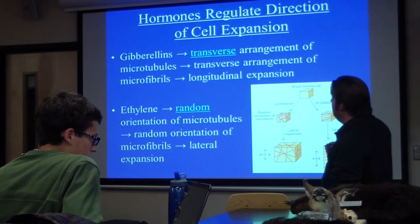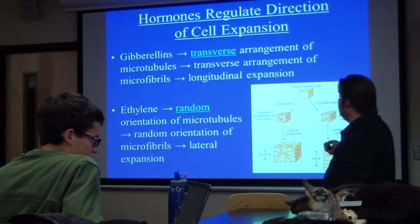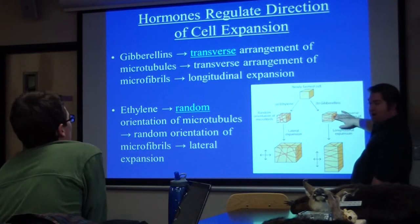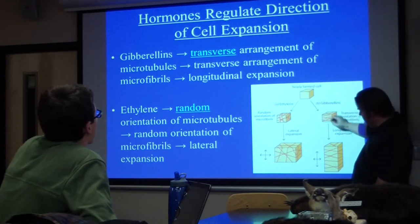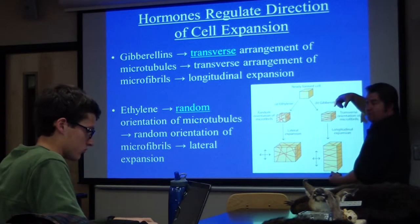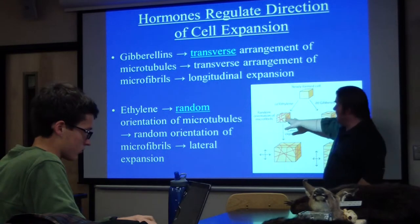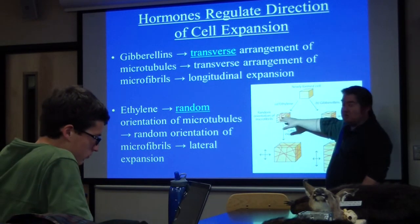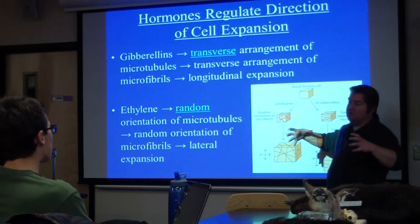For example, gibberellins lead to a transverse arrangement of microtubules, which leads to a transverse arrangement of microfibrils, which leads to longitudinal expansion — that's going to be a stem or root cell under the action of gibberellins. Ethylene, on the other hand, leads to a random orientation of microtubules, which leads to a random orientation of microfibrils, which leads to overall lateral expansion, like something you might find in a leaf cell.